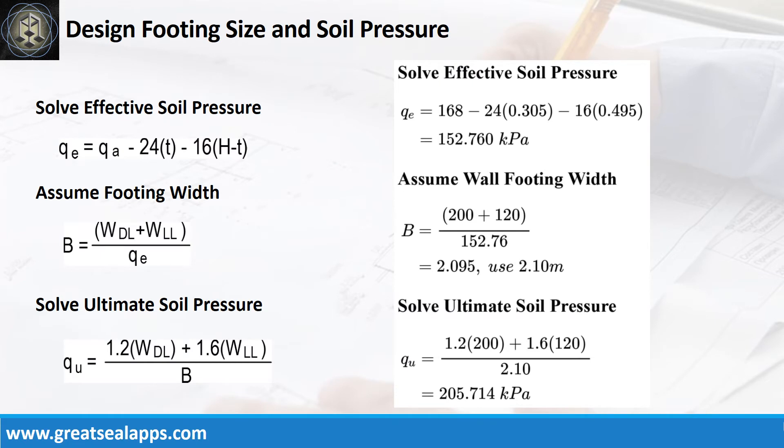Given allowable soil pressure equals 168kPa, depth from natural grade line equals 800mm, and assumed footing depth equals 305mm. The effective soil pressure is 152.76kPa. Given uniform dead load equals 200kN per meter and uniform live load equals 120kN per meter. The footing width is 2.1 meters and the ultimate soil pressure is 205.714kPa.